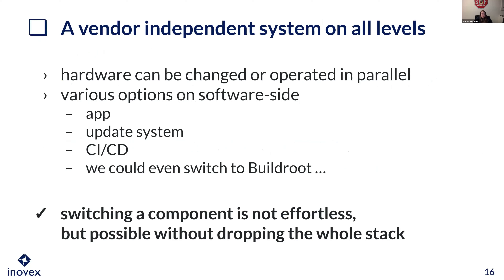Last point: we want a vendor-independent system on all levels, and with everything I've named we can reach this. Hardware can be changed or operated in parallel easily, especially using kas configurations. We have various options on the software side for the app, the update system, and the CI. If Yocto ever breaks we could even switch to Buildroot, though we won't. Switching a component is never effortless, but it's far more possible without dropping the whole stack as we had to do when switching from Android Things.